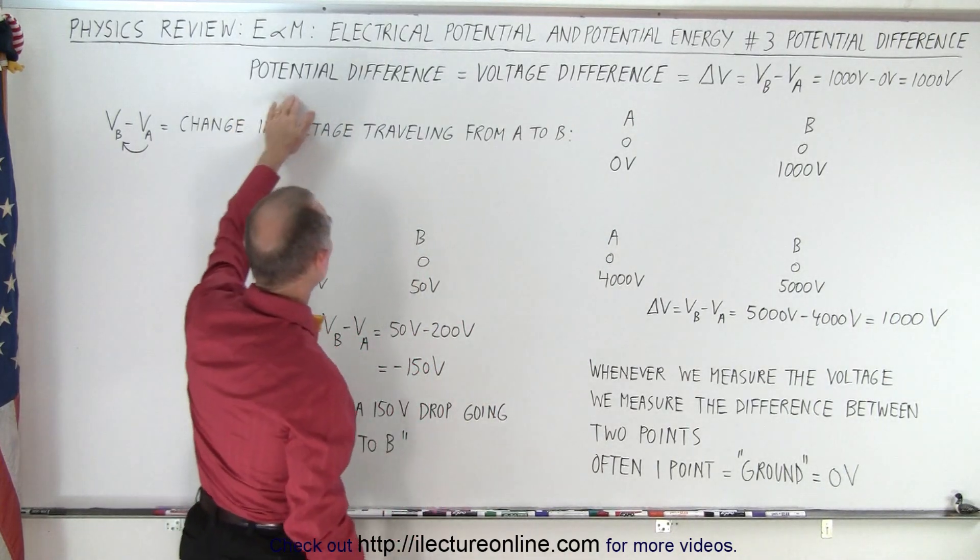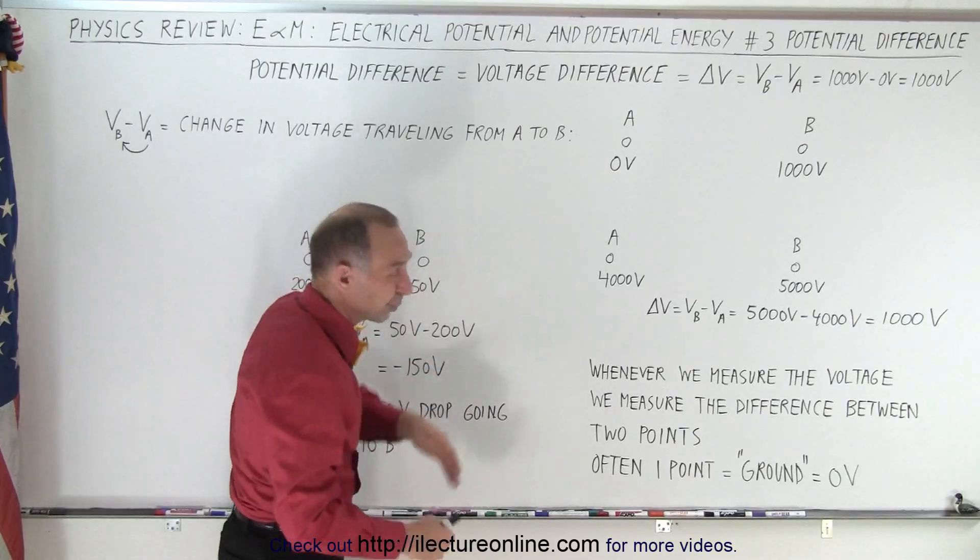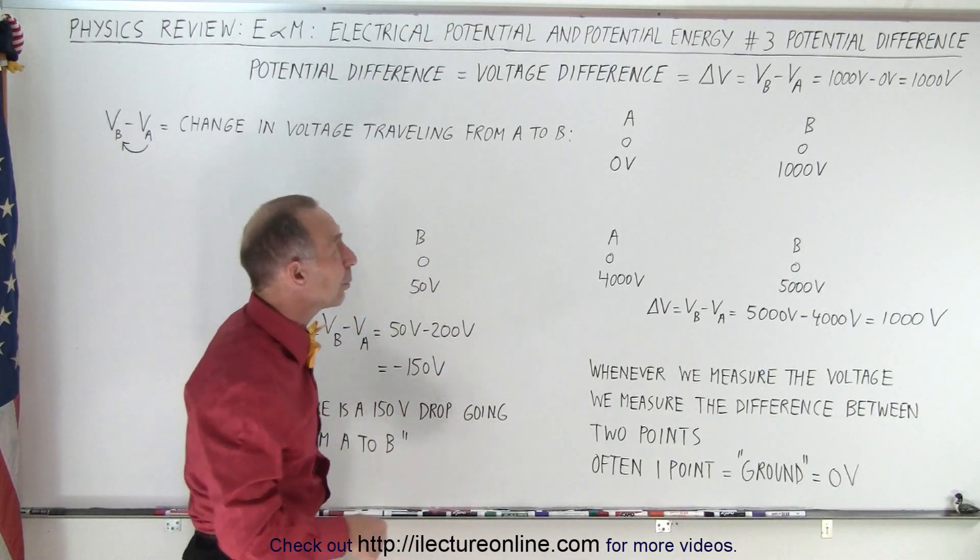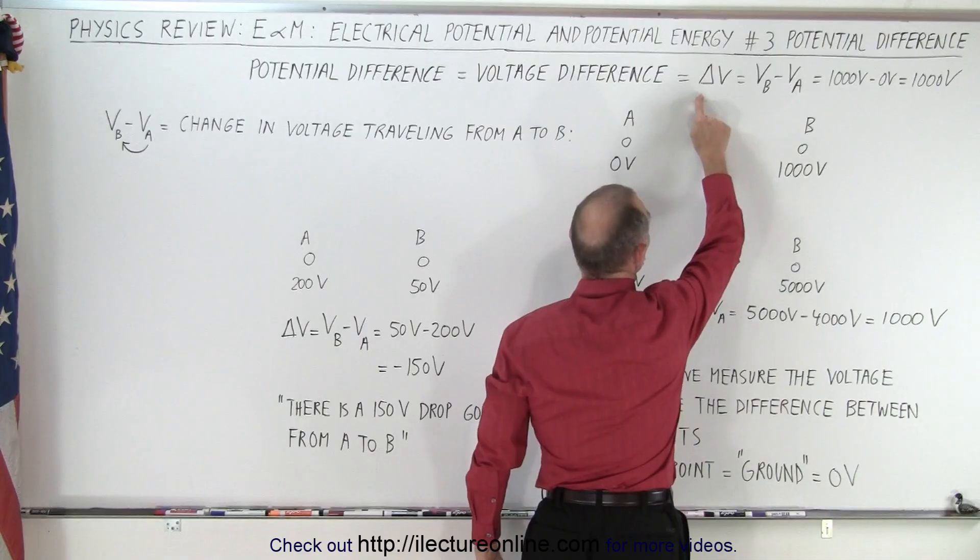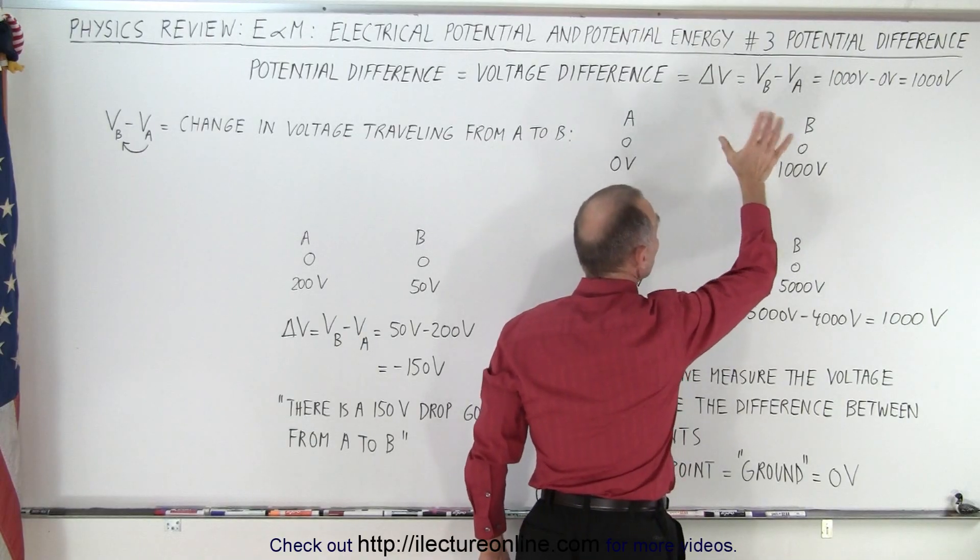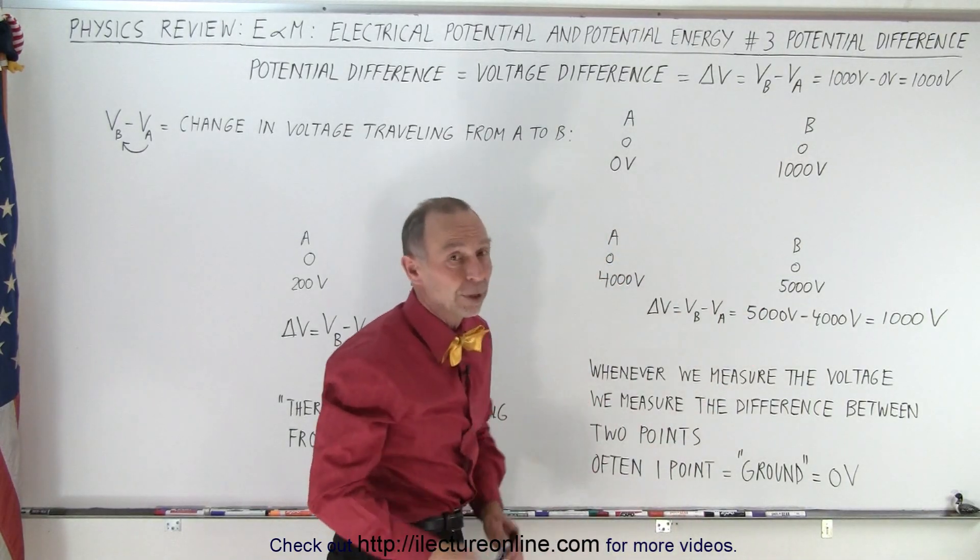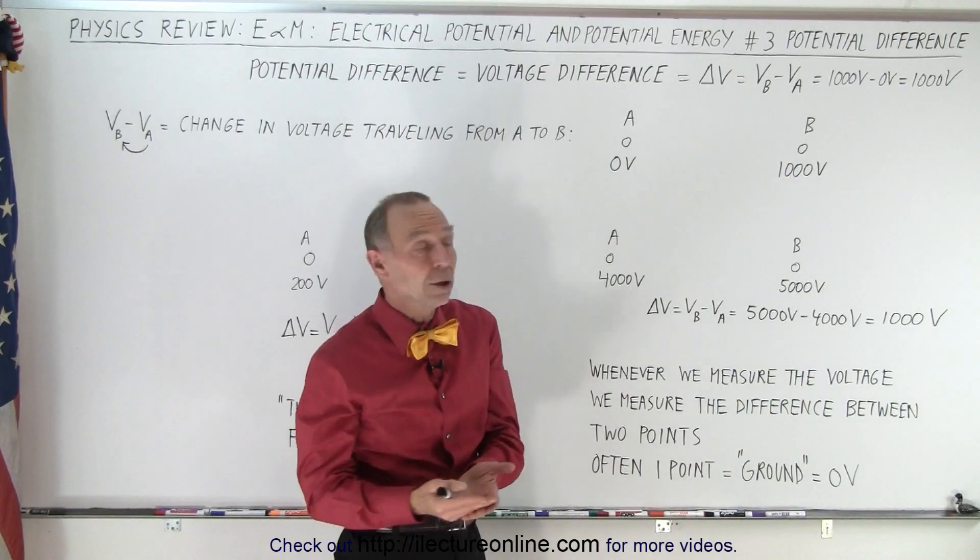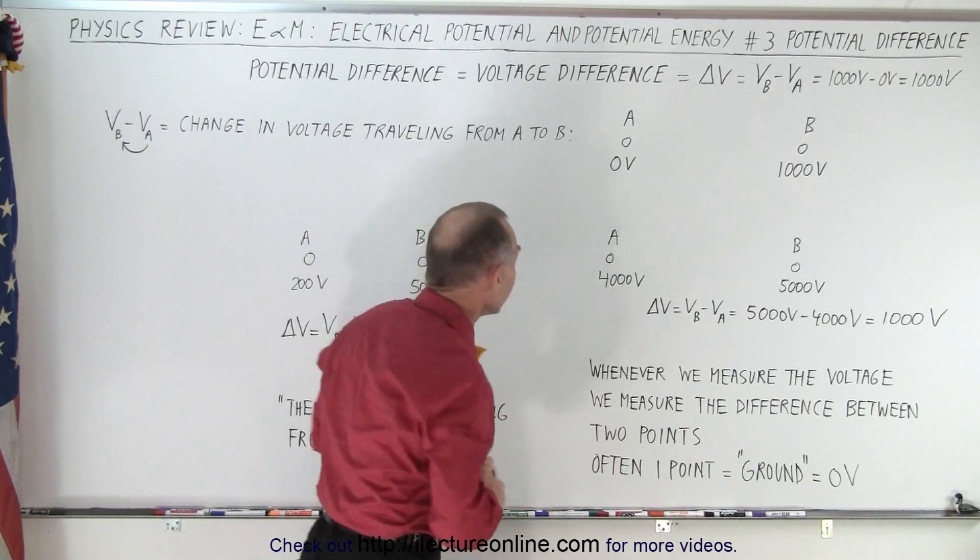And so we talk about the potential difference or the voltage difference which is essentially the same thing, and we write it with a little delta symbol, delta V, for voltage difference, and so we subtract one voltage from another. So we can write VB minus VA or VA minus VB. Now what does that mean?